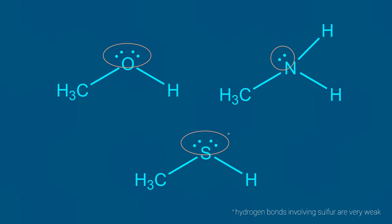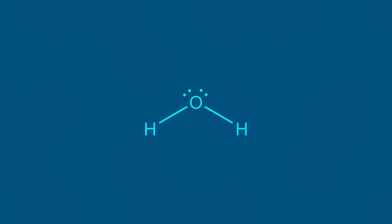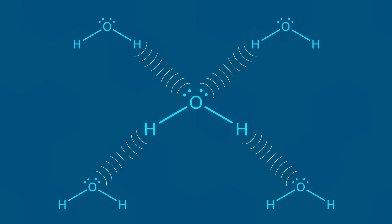A great example of this in action is, of course, water. Water molecules have two available hydrogens and two available lone pairs of electrons. This means each water molecule can donate two hydrogen bonds and accept two hydrogen bonds. In other words, every water molecule can make four hydrogen bonds with its neighbors.